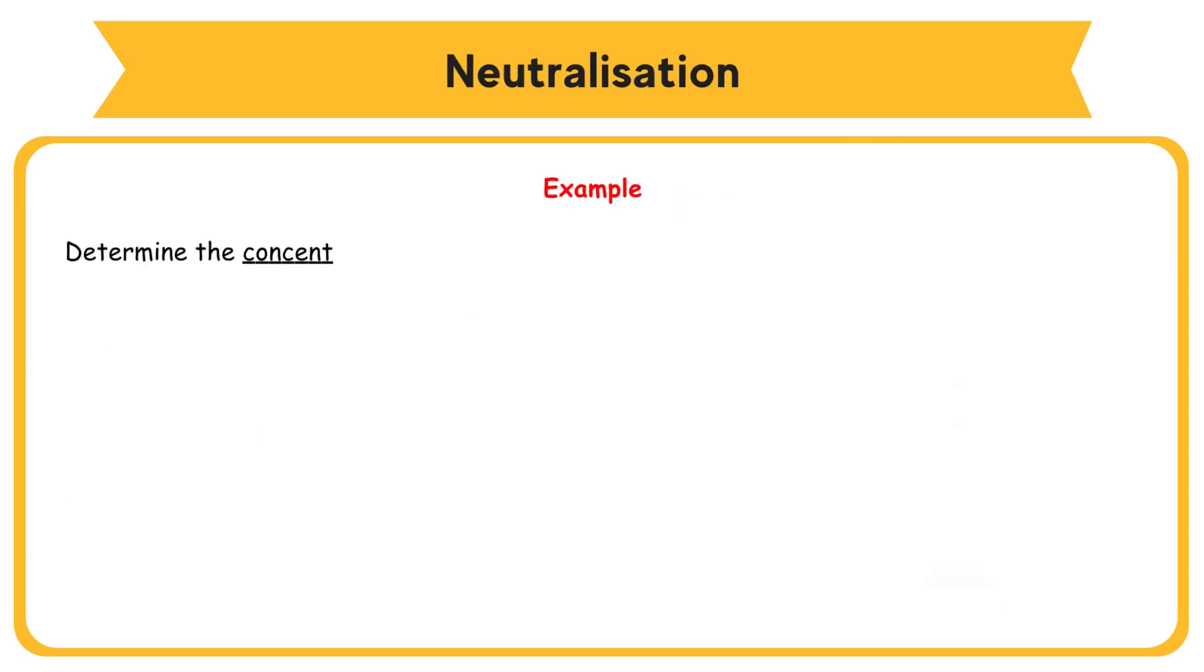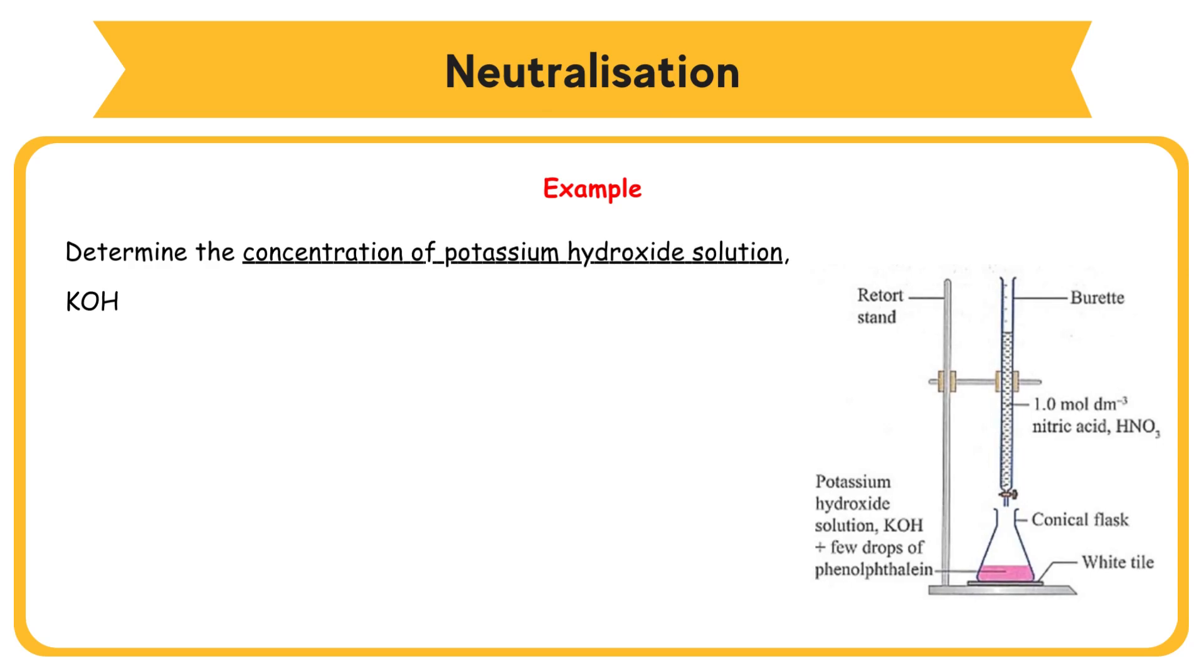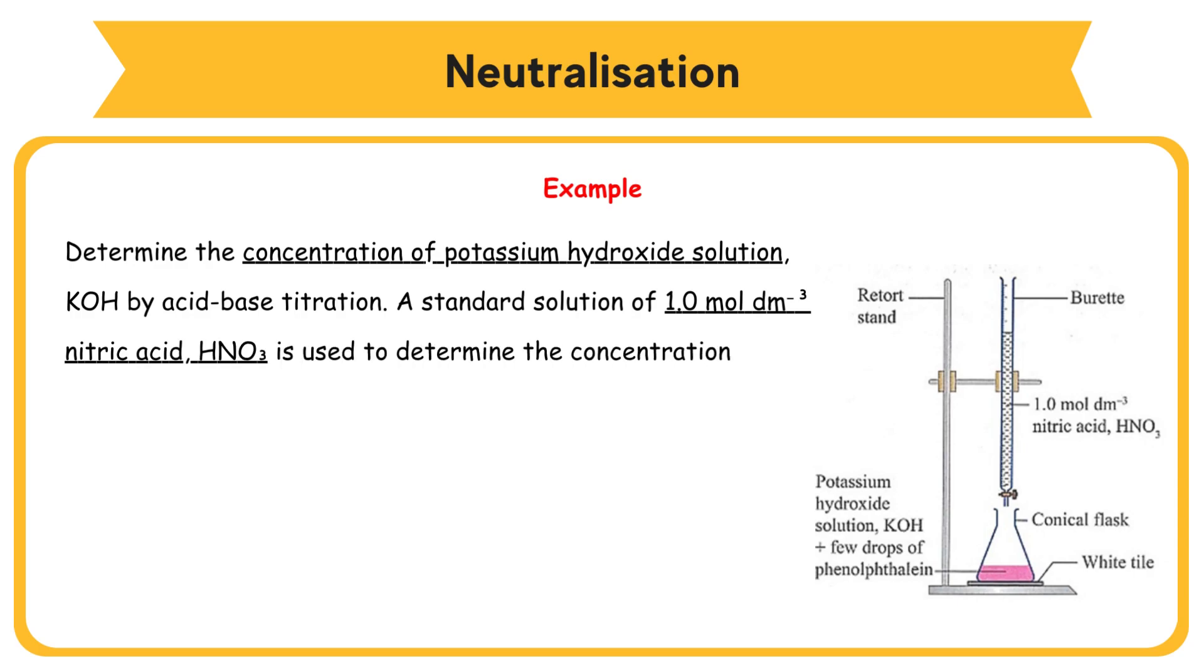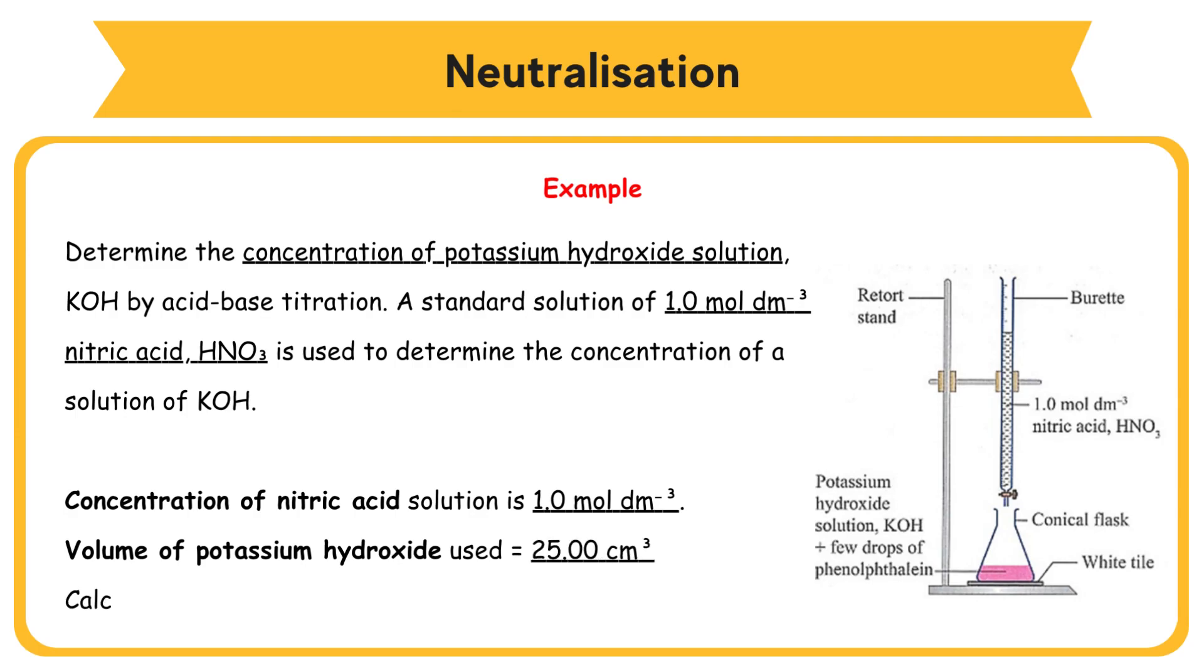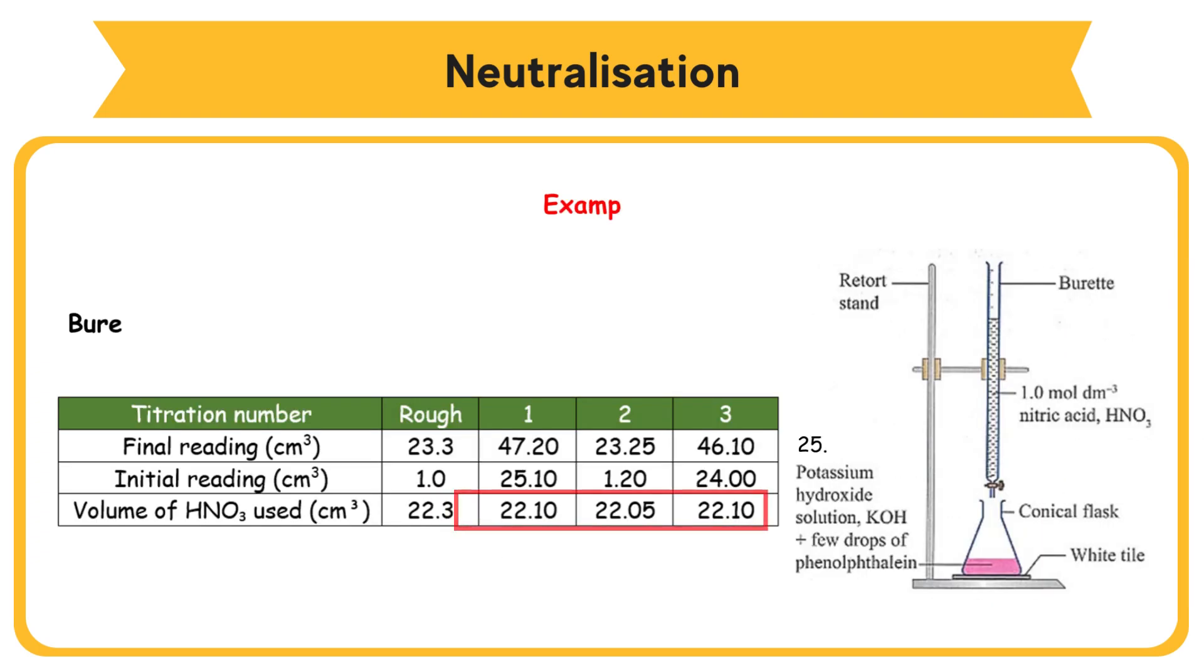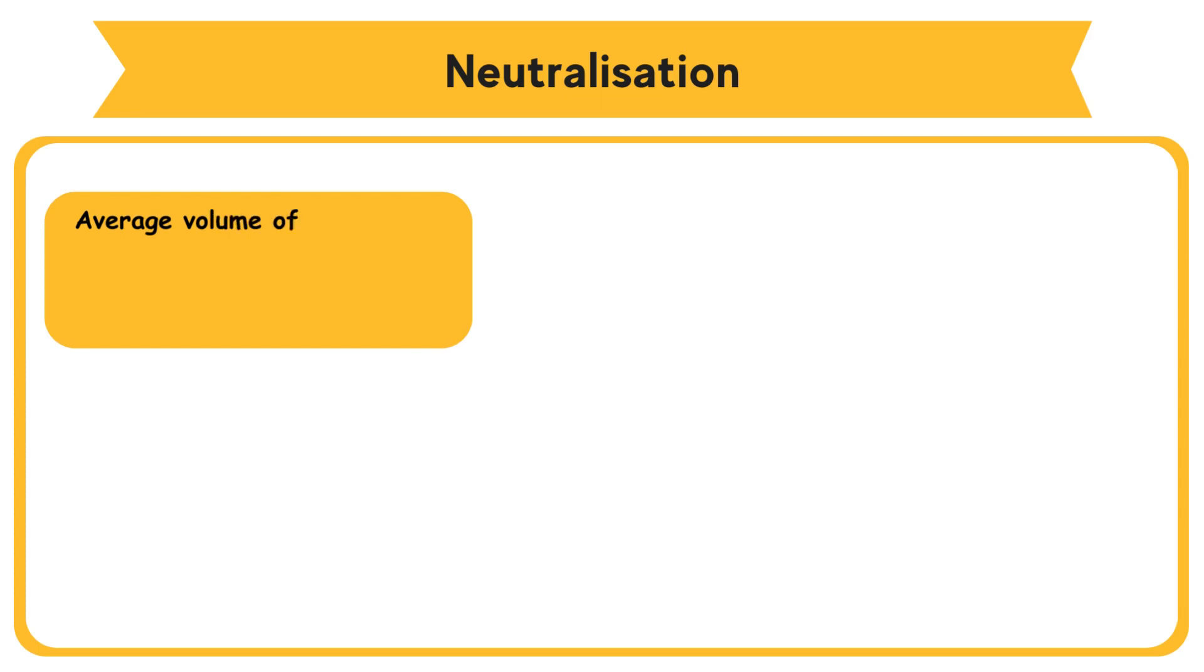Determine the concentration of potassium hydroxide solution (KOH) by acid-base titration. A standard solution of 1.0 mol/dm³ nitric acid (HNO3) is used. Volume of potassium hydroxide used equals 25.00 cm³. Calculate the volume of HNO3 needed. Average volume of HNO3 used equals (22.10 + 22.05 + 22.10) / 3 = 22.08 cm³.